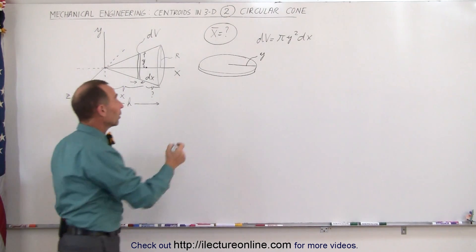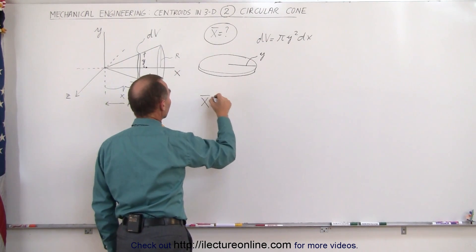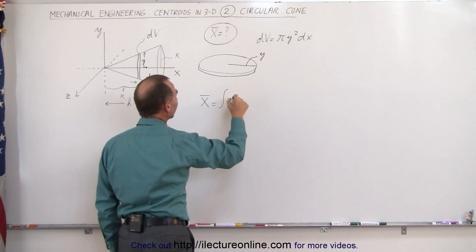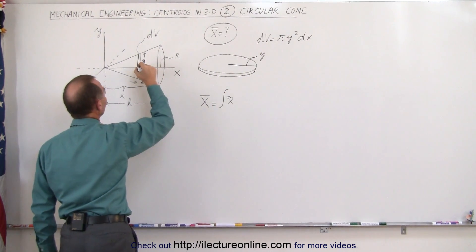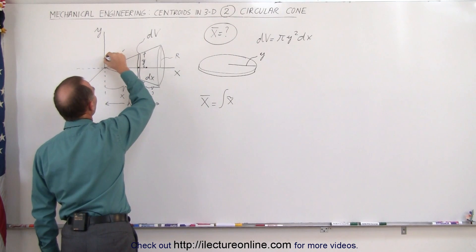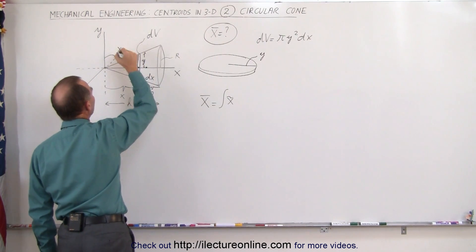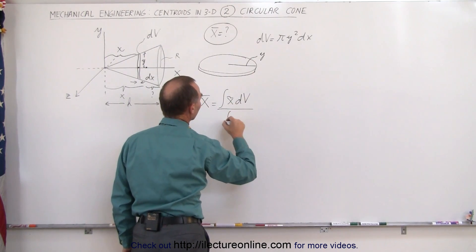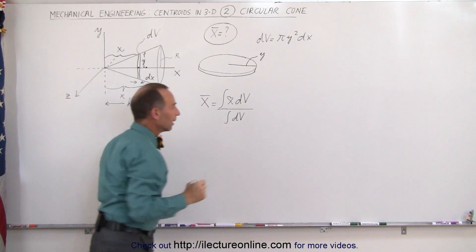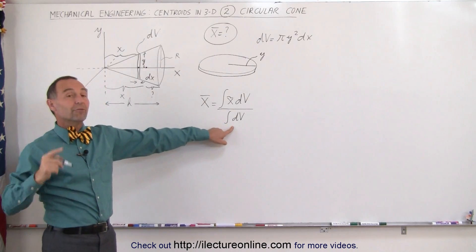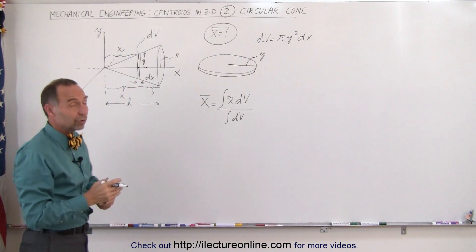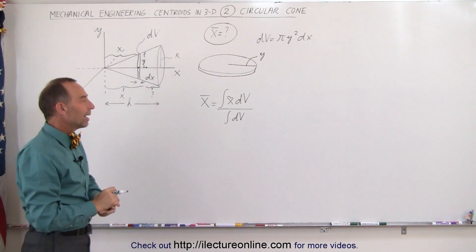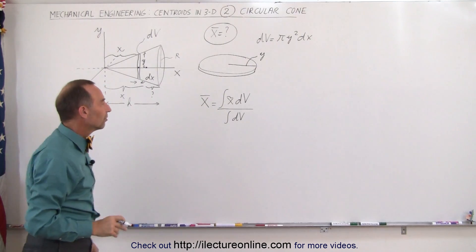The reason why we need that is because the equation to find the x-coordinate of the centroid is equal to the integral of the x-coordinate of each little slice. So the x-coordinate would be right there at a distance x away from the origin, right there, and multiply times dv and the whole thing divided by the integral of dv. Since this represents the volume of the right circular cone which is equal to one-third the base times the height, we can then go ahead and plug in what that is equal to.